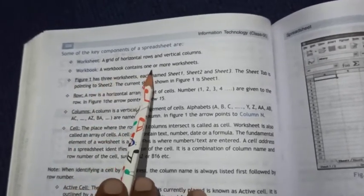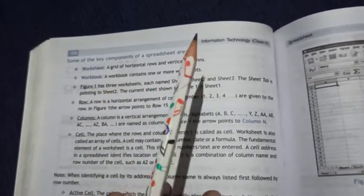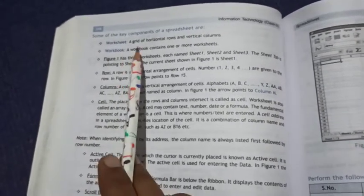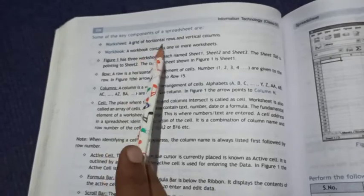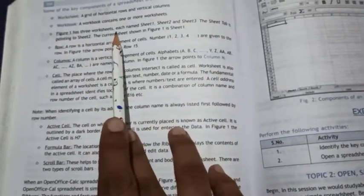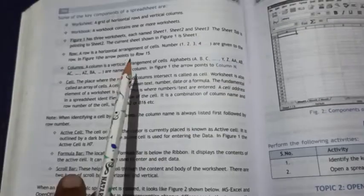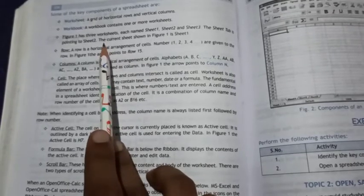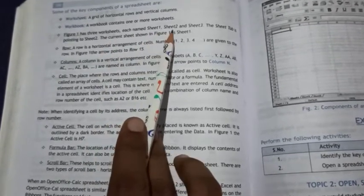Workbook: a workbook contains one or more worksheets. When multiple worksheets are attached together, it creates a workbook. In Figure 1, the workbook has three worksheets named Sheet 1, Sheet 2, and Sheet 3. When we open MS Excel, there will be three default worksheets.